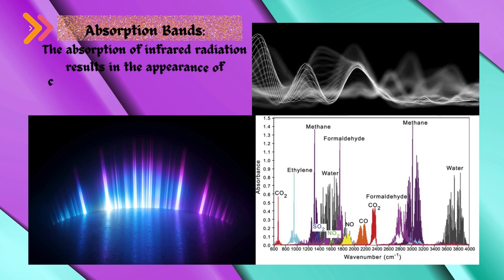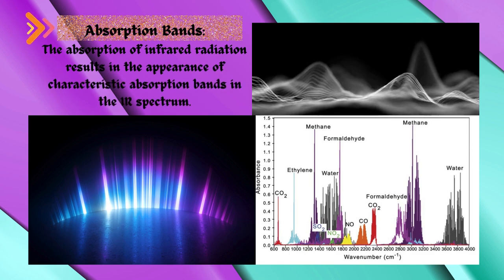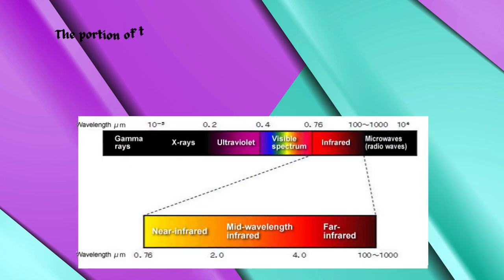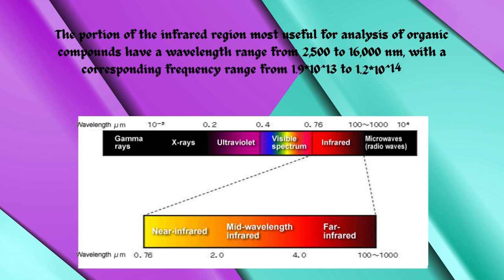Absorption bands. The absorption of infrared radiation results in the appearance of characteristic absorption bands in the IR spectrum. The portion of the infrared region most useful for analysis of organic compounds have a wavelength range from 2,500 to 16,000 nanometers, with a corresponding frequency range from 1.9 into 10 to the power of 13 to 1.2 into 10 to the power of 14 hertz.